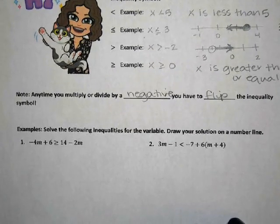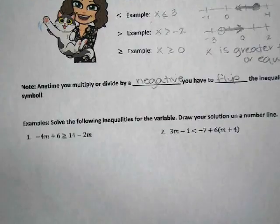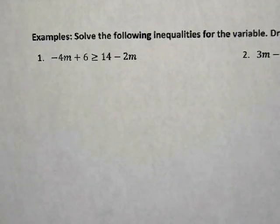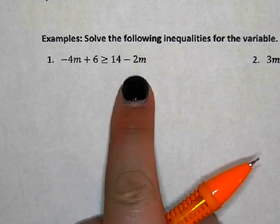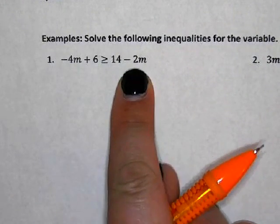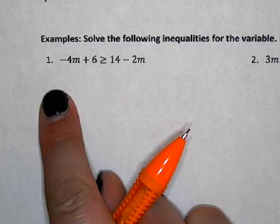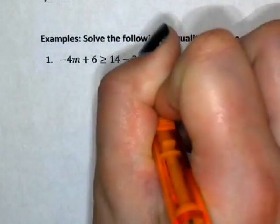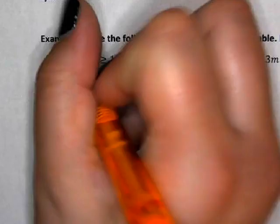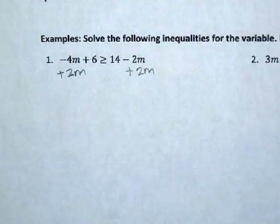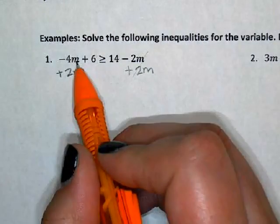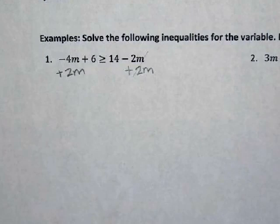Let's try example number one. I'm going to force a negative to happen so we can practice. The first step is taking the 2m over and adding it to the left side so that we have a negative in front of our variable. So we take the 2m, do the opposite, and move it to the other side. Those zero out — negative 4m and positive 2m gives you negative 2m.